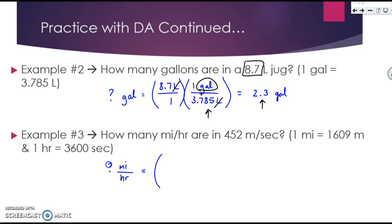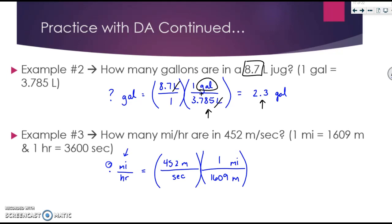This time for our given, because we have two units, they're going to be separated. So I have 452 meters over seconds. Now I'm going to do the exact same thing as before. Meters is on top, so I need it to diagonally drop and go to the bottom. I'm looking for miles, so miles will go on top. One mile equals 1609 meters — I always keep the number with its unit: one mile, then 1609 meters. But I'm not done; at this point I've only converted meters to miles. I need another conversion factor to convert seconds to hours.